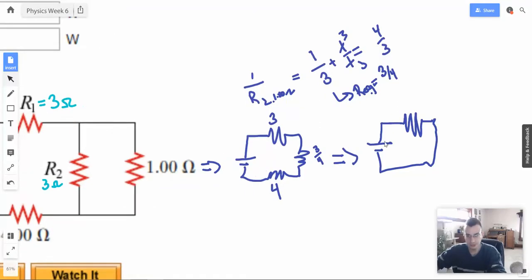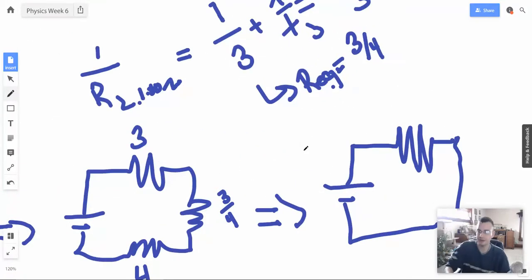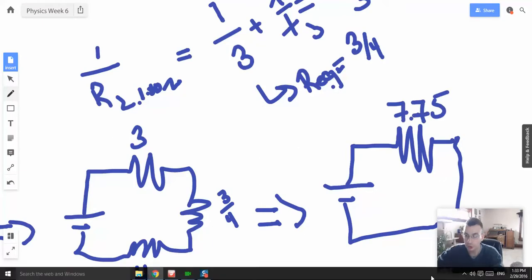All right. And this battery here is still 24. All right. Now for series, you just add them together. So 7, 3 plus 4 is 7, 7 and 3 fourths. So I'm going to write that as 7.75. We now have the equivalent resistance, equivalent resistor.